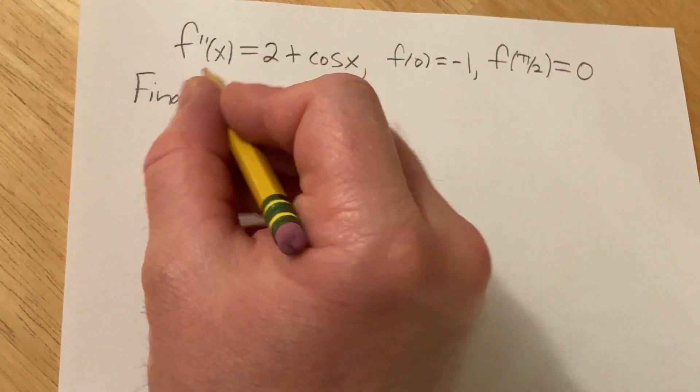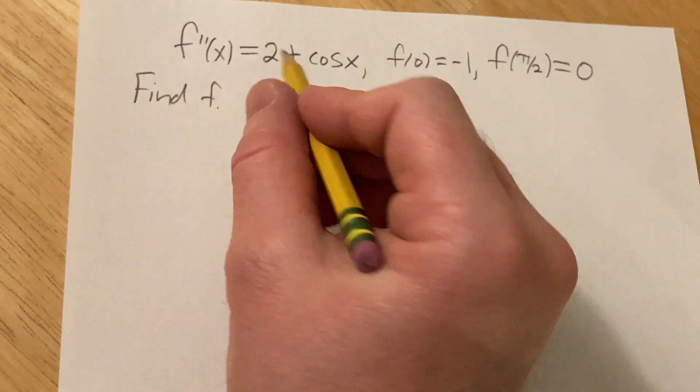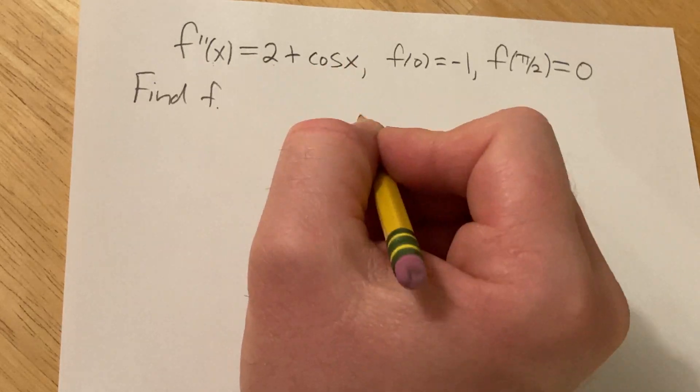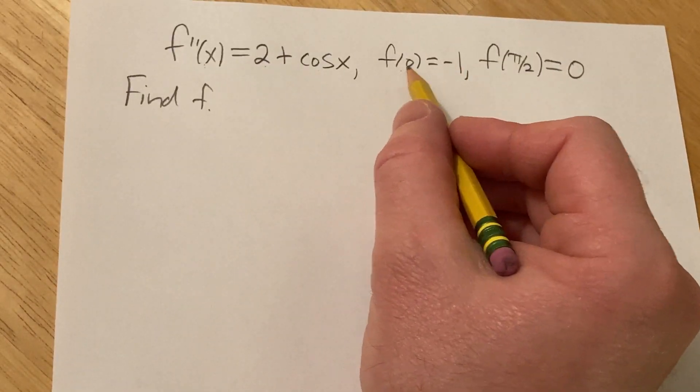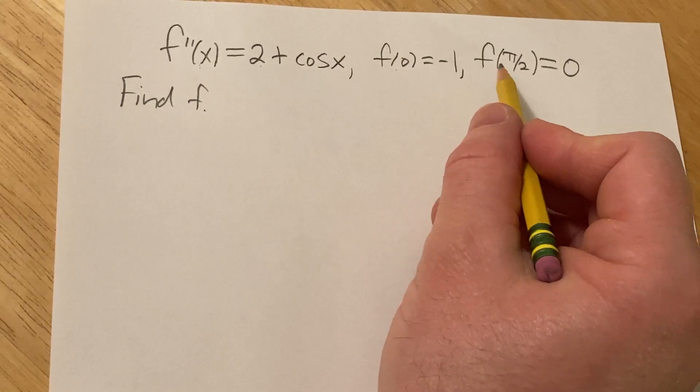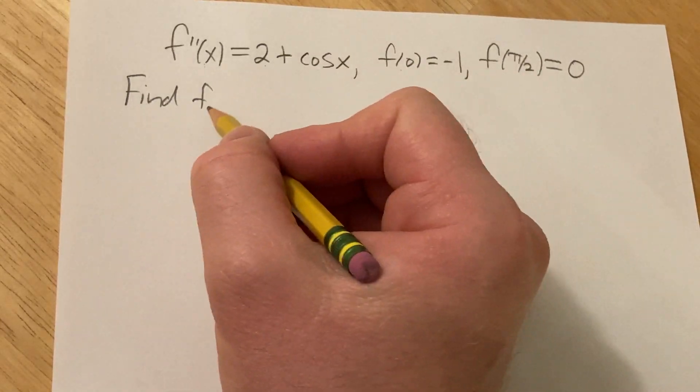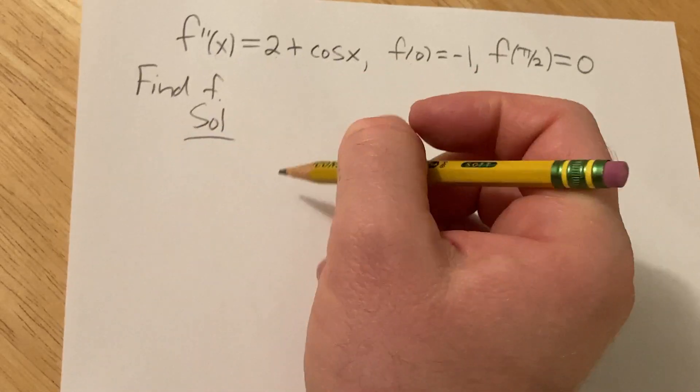Hi, in this problem we have that the second derivative of a function is equal to 2 plus cosine x. We're told that f of 0 is negative 1 and f of pi over 2 is 0. And the question is to find f. Let's go ahead and try to do this.